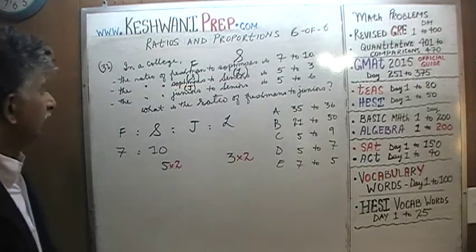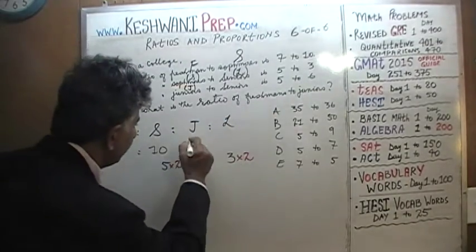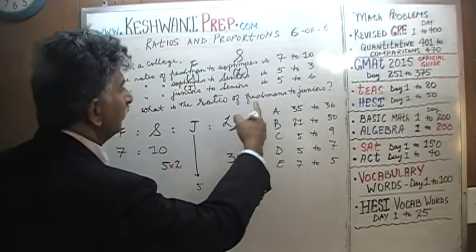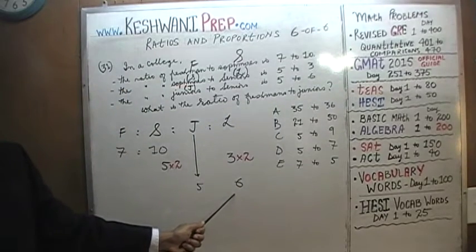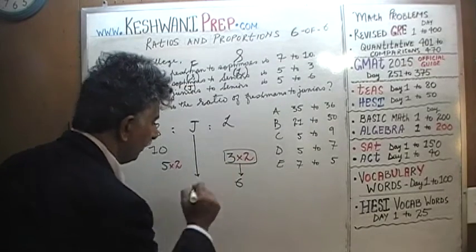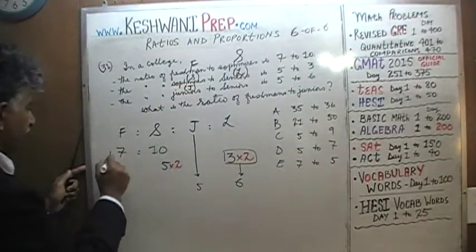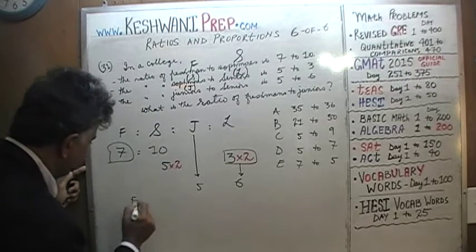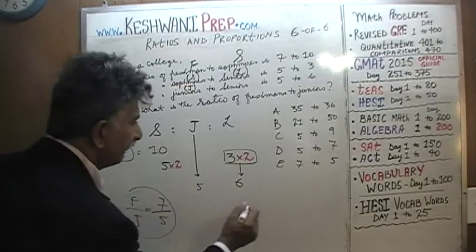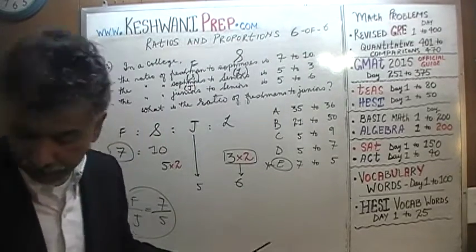They go on to tell us that juniors to seniors is 5 to 6. We actually lucked out because the seniors number is already 6 here and 6 there, so we don't have to do anything. The question simply asks: what's the ratio of freshmen to juniors? Freshmen are right there — there are 7 of them. And there are 5 juniors. The answer is 7 to 5.